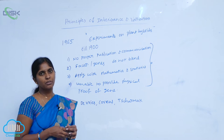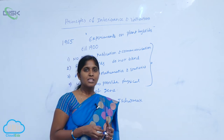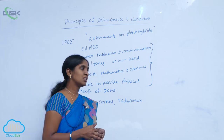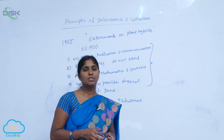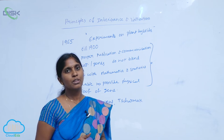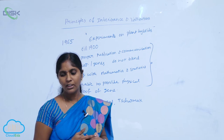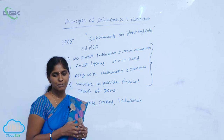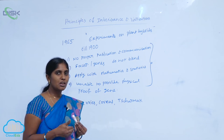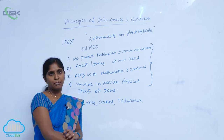After Mendel's death, his discoveries were rediscovered by scientists De Vries, Correns, and Tschermak. They re-conducted Mendel's experiments and are known as the rediscoverers of Mendelian genetics. At the same time, the microscope was invented, the nucleus was found within the cell, and chromosomal material was also discovered.